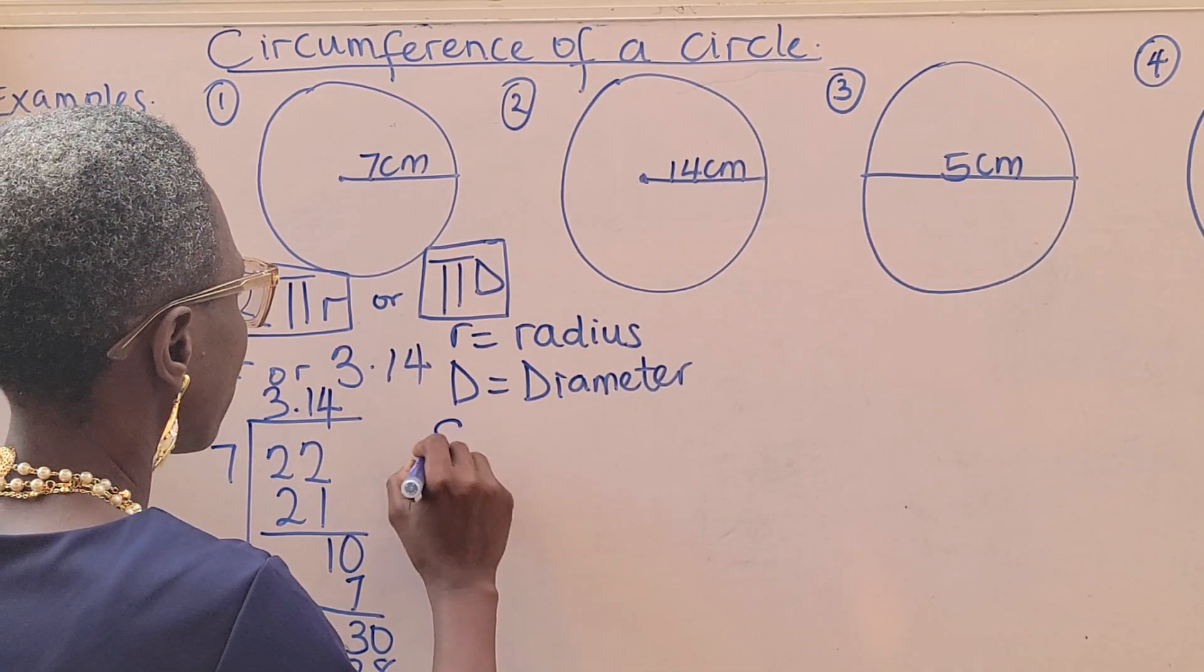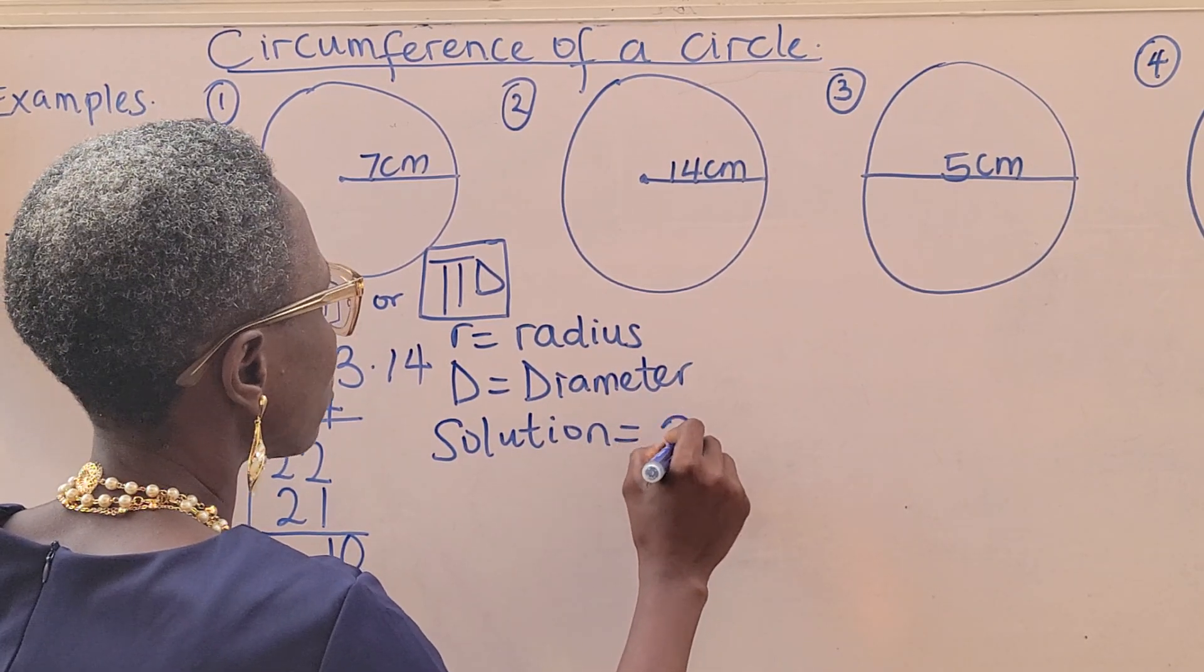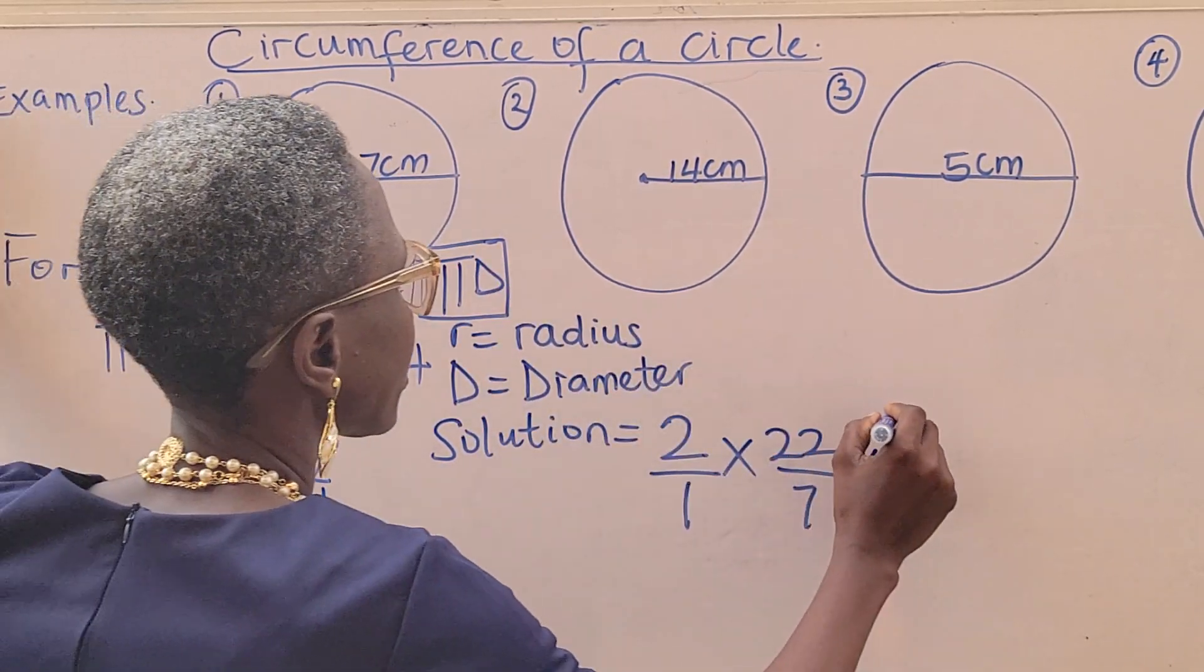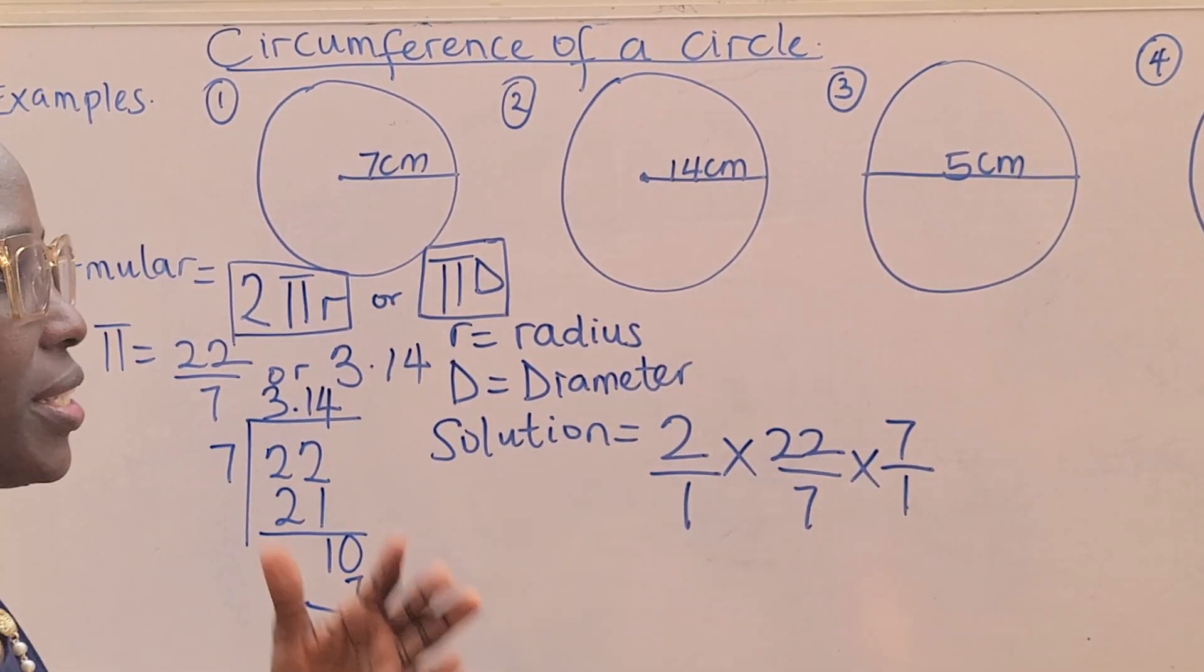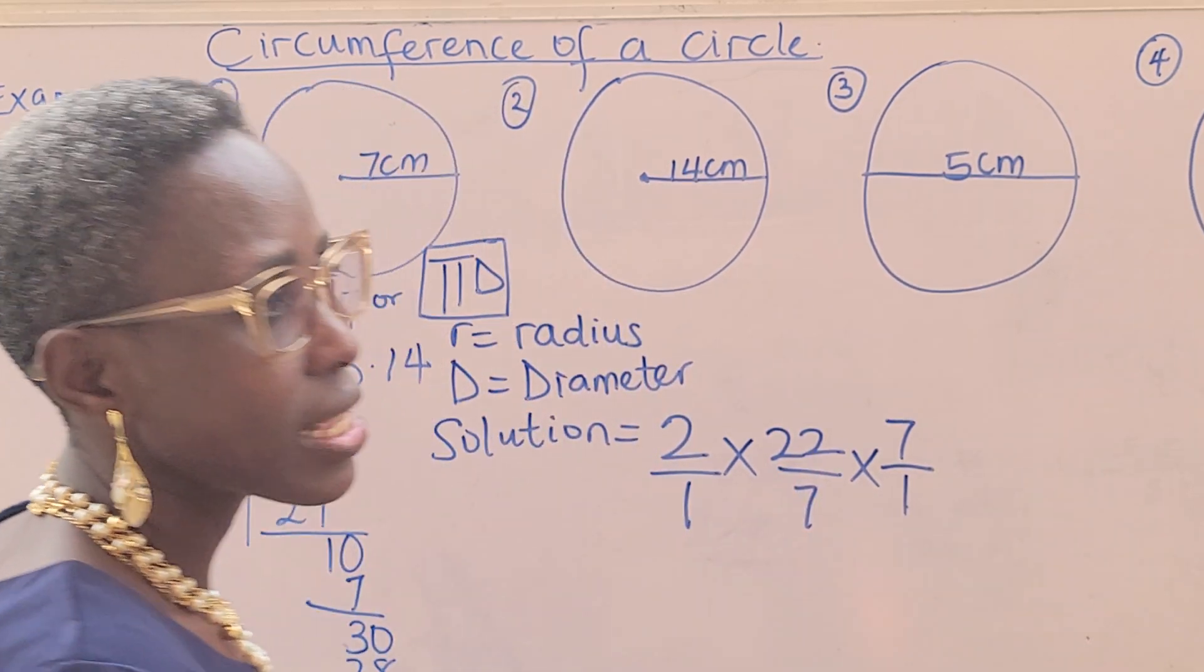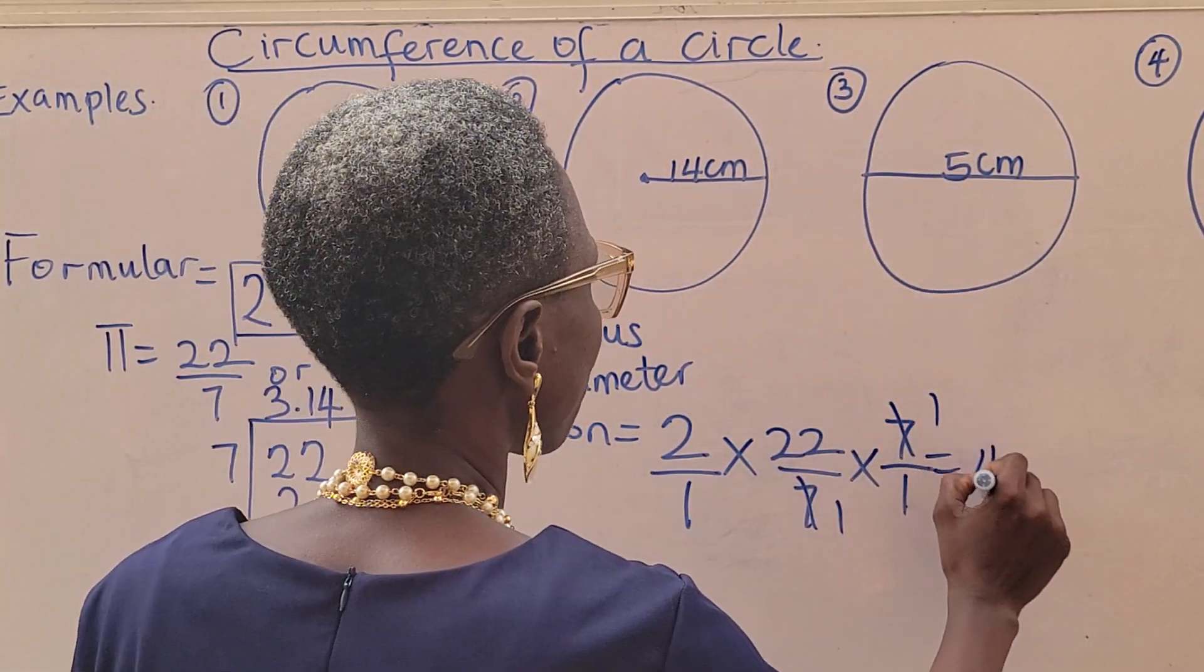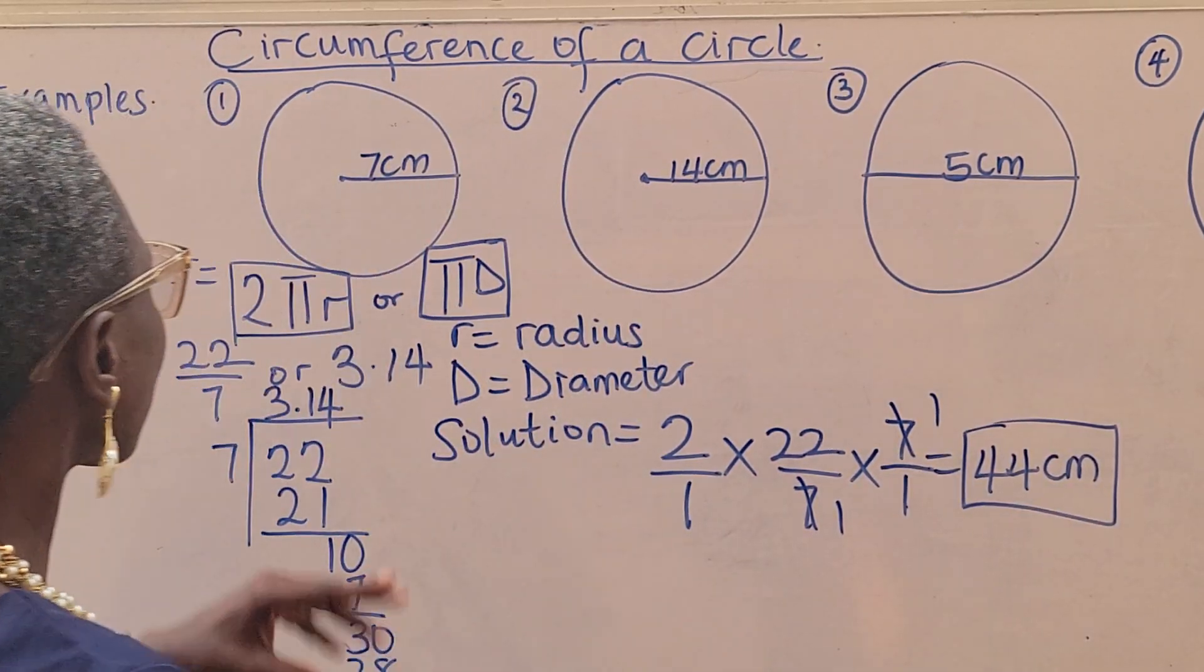Solution is going to be 2πr: 2 over 1 times π, which is 22 over 7, times 7 over 1. Once I have my formula and I apply it, I'll get my answer. Now 7 can divide 7, so I'm left with 2 times 22, which is 44 centimeters. That's my final answer to the first question.